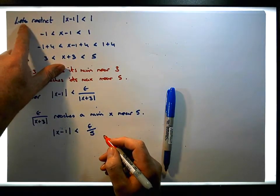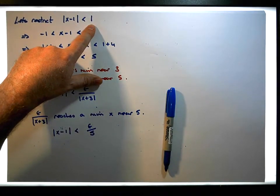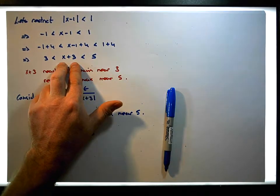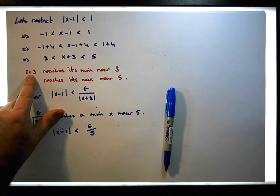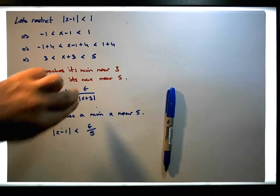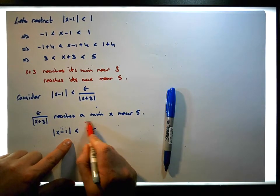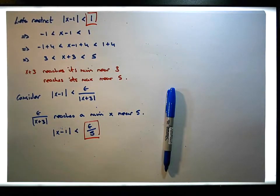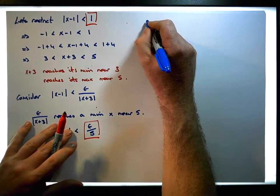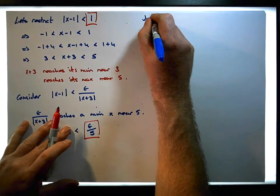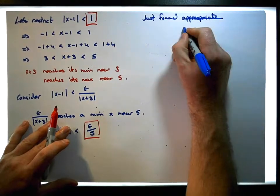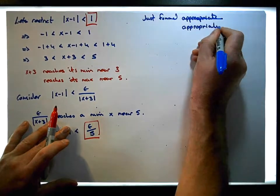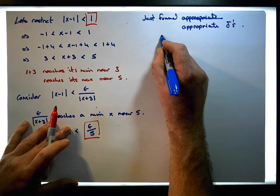So from our initial restriction we have one delta: x minus 1 is less than 1. Working through that condition, we found that x plus 3 reaches its minimum near 3 and its maximum near 5. Epsilon divided by a bigger number gives a smaller upper bound, so we now have two appropriate deltas: epsilon over 5, and 1. The delta we will choose is the minimum of these two.